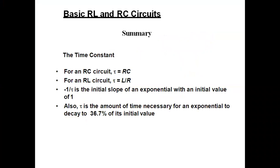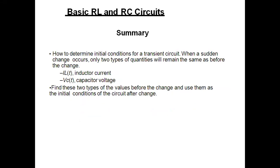In summary: the time constant for the RC circuit is τ = RC; for the RL circuit, τ = L/R. Also, τ is the amount of time necessary for an exponential to decay to 36.7% of its initial value. The initial conditions are summarized and applied to find the nature of the response of RC and RL circuits.